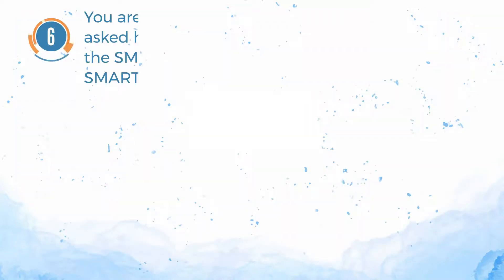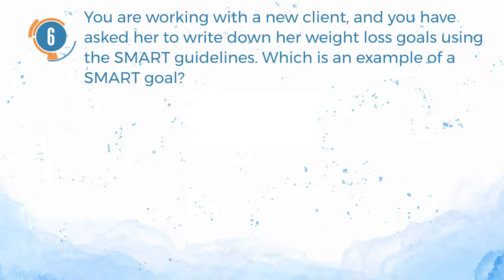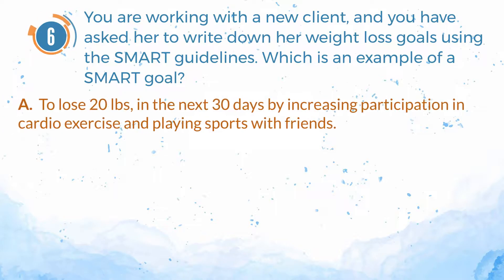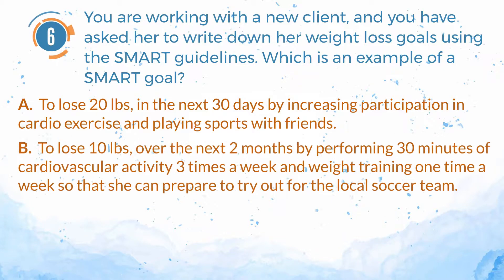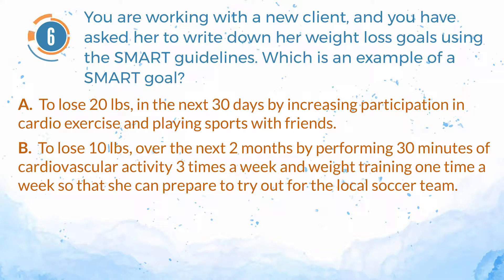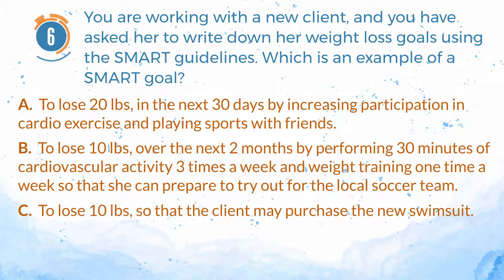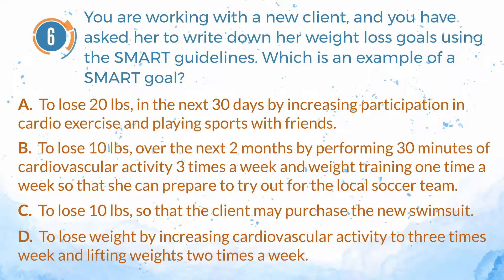Number 6. You are working with a new client, and you have asked her to write down her weight loss goals using the SMART guidelines. Which is an example of a SMART goal? A. To lose 20 pounds in the next 30 days by increasing participation in cardio exercise and playing sports with friends. B. To lose 10 pounds over the next two months by performing 30 minutes of cardiovascular activity three times a week and weight training one time a week so that she can prepare to try out for the local soccer team. C. To lose 10 pounds so that the client may purchase a new swimsuit. D. To lose weight by increasing cardiovascular activity to three times a week and lifting weights two times a week.